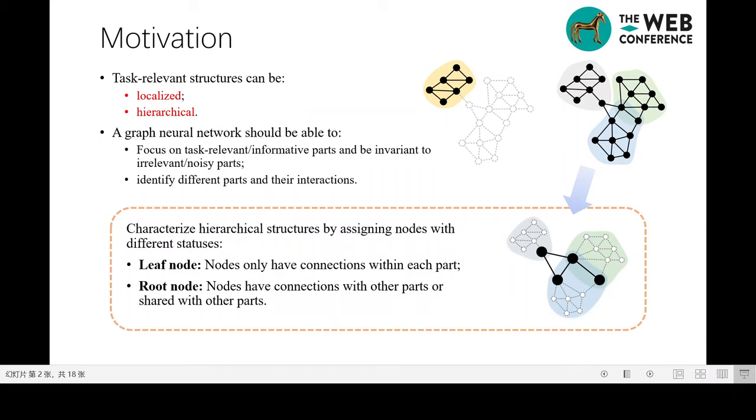Task relevant structures can also be hierarchical as the given right graph, which is characterized by the interaction of several parts. This requires that the graph neural network model should be able to identify different parts and their interaction. Here, we provide a perspective to characterize the hierarchical structure of a graph. Supposing that graph A is characterized by three different parts and their interaction, then graph A is a hierarchical graph with height two.